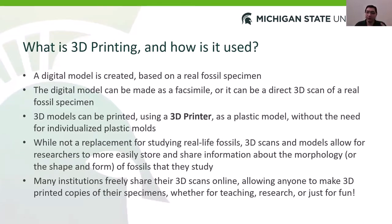We create digital models of real life fossil specimens, usually by scanning them using specialized equipment. These scans can either be a one-to-one match to a real life fossil specimen, or a facsimile of what that overall specimen should look like. These 3D models can then be printed using a machine known as a 3D printer, which essentially makes a plastic mold of that fossil.